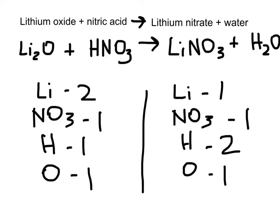So let's look at the lithium first — two on the left, one on the right. The best thing to do is put a big 2 in front of lithium nitrate. Let's update our counts as we go so we don't lose track — we now have two lithiums and, because everything after that 2 is doubled, we also have two nitrate groups. Don't worry if it looks like it's getting complex — just keep going.